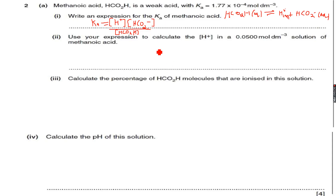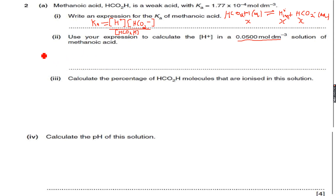HCO₂H is the concentration of methanoic acid, and that's how we got the expression for Ka. So use your expression to calculate the concentration of H⁺ ions in a 0.05 mol/dm³ solution of methanoic acid. We are given the Ka, and from the balanced equation, if x moles of HCO₂H dissociate, we get x moles of H⁺ and x moles of HCO₂⁻ ions. So the concentration of H⁺ and HCO₂⁻ is equal, and Ka equals [H⁺]² over [HCO₂H].